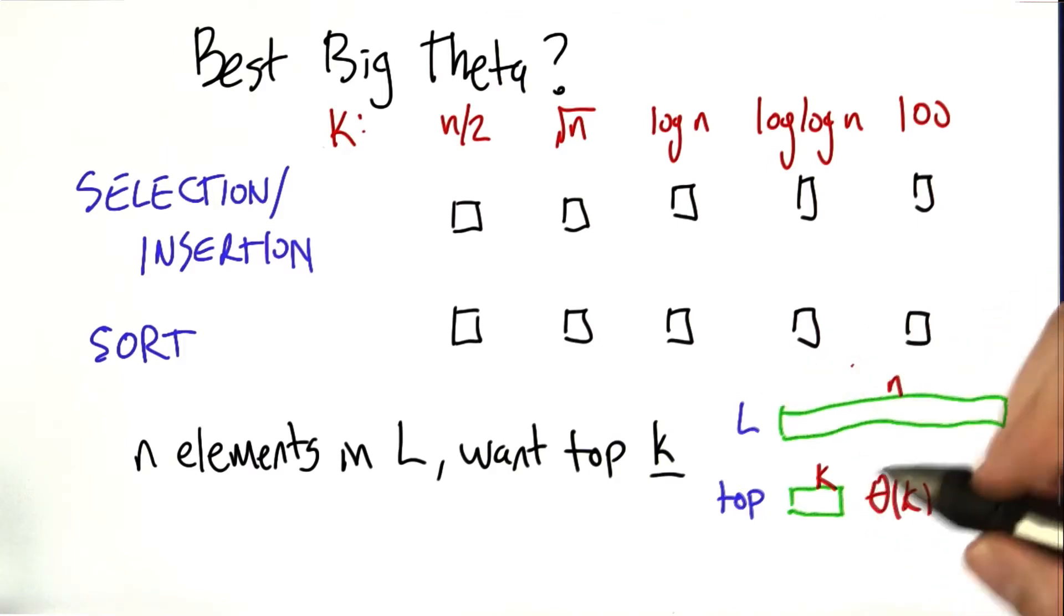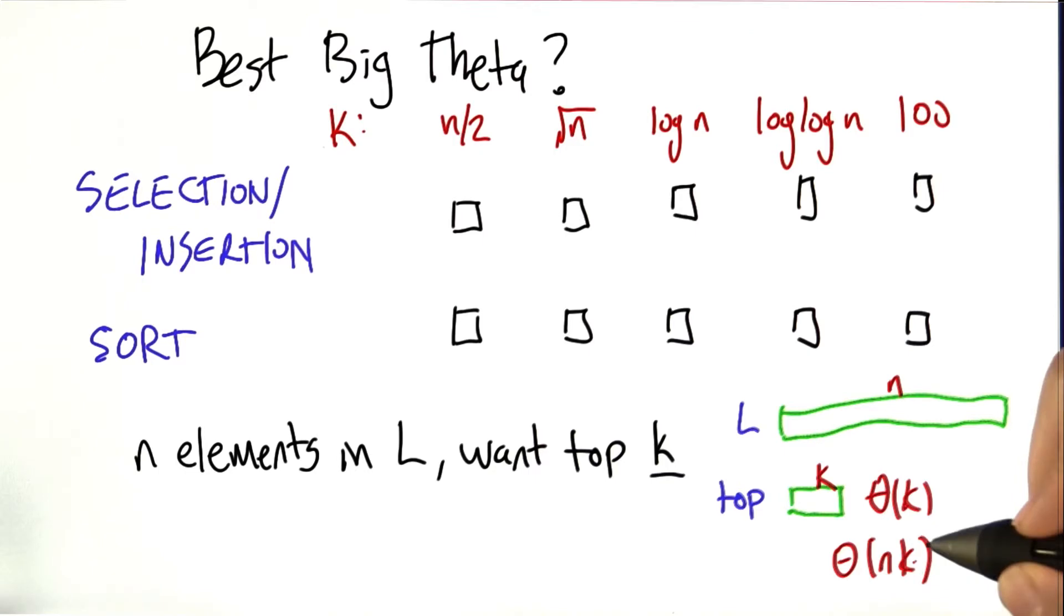The insertion algorithm is going to take n times that, or a total of big theta of n times k.